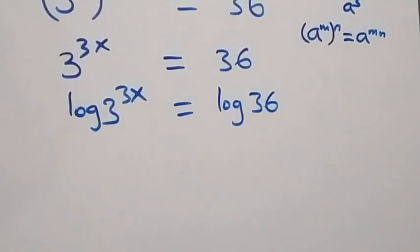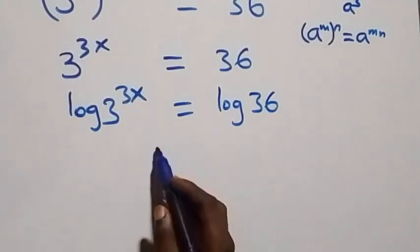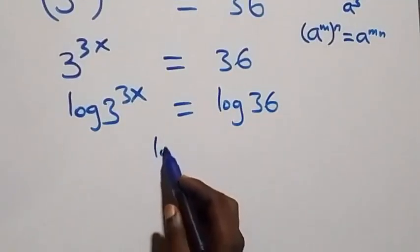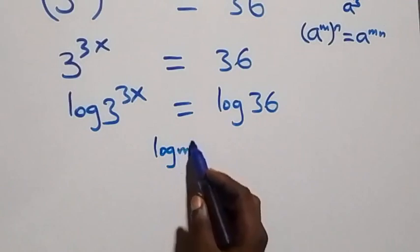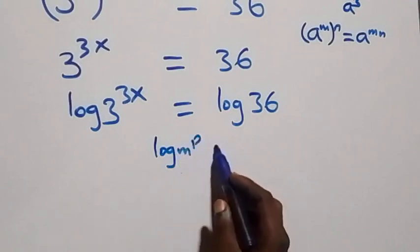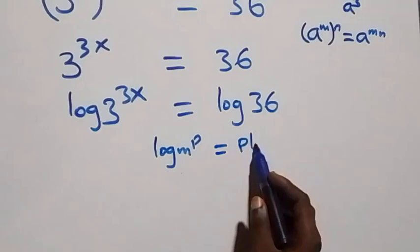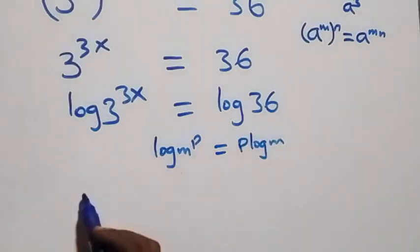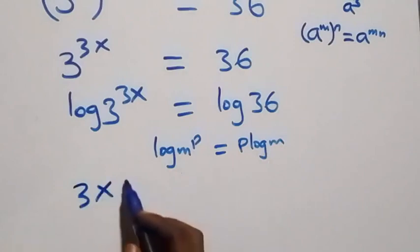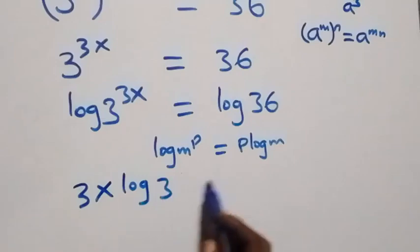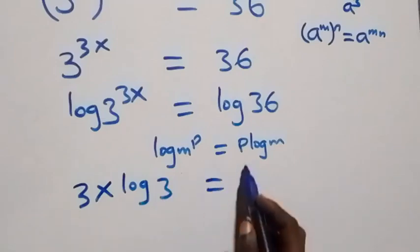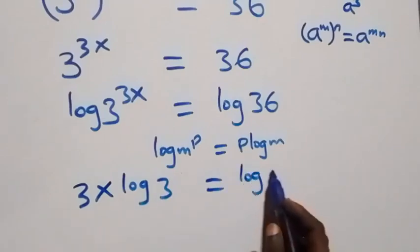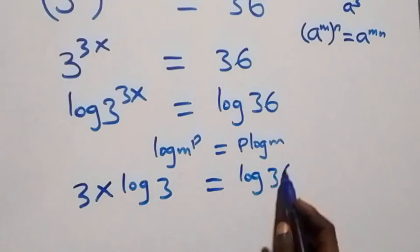From here we apply the power rule of logarithms: log of m raised to power p is the same as p times log m. So what we have becomes 3x log 3 equals log 36.